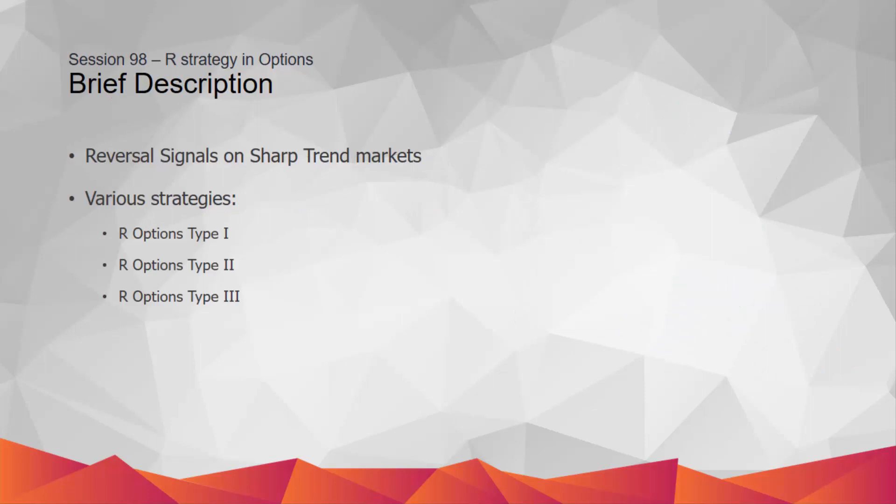The components and specifications of this strategy are described thoroughly in session 94. Due to the high performance of this strategy, it is suitable for options market, especially on trend markets with suitable slope. The reversal signals are delivered by these strategies. The available types on Options Trades are R Options Type 1, Type 2, and Type 3.